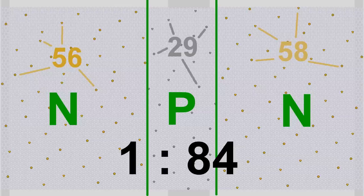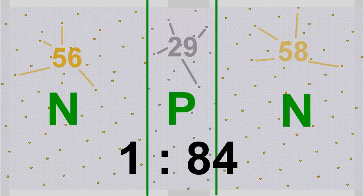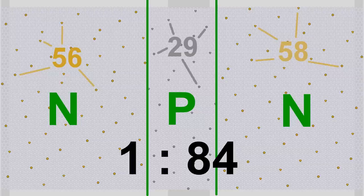Therefore the simulation uses 143 impurity atoms and around 12,000 silicon atoms, hence there are approximately 84 silicon atoms per impurity atom. There is the same concentration of impurity atoms in all three layers, which doesn't conform to real devices but keeps the simulation simple.